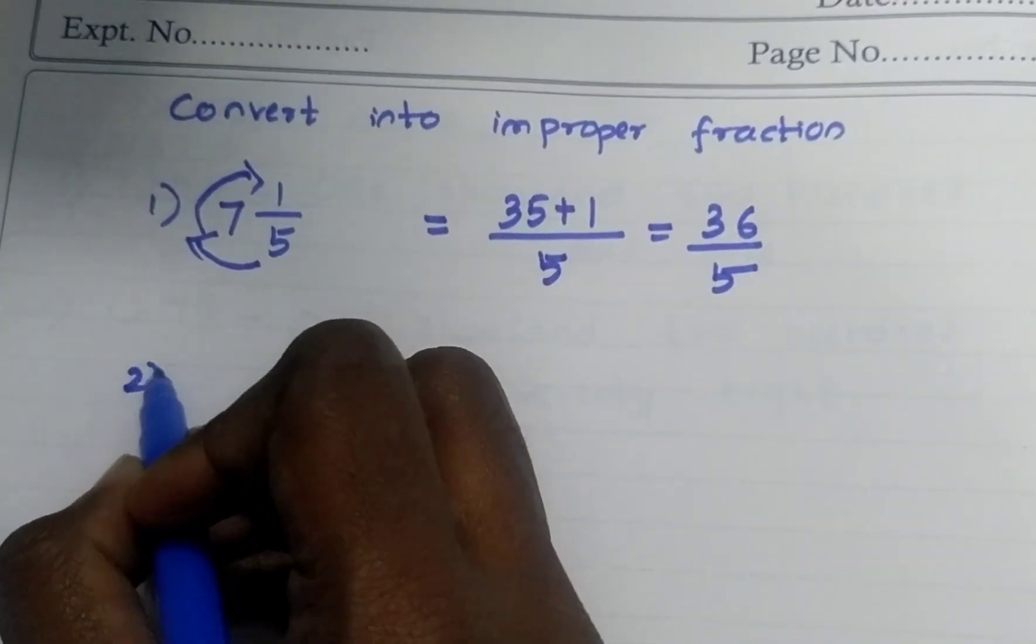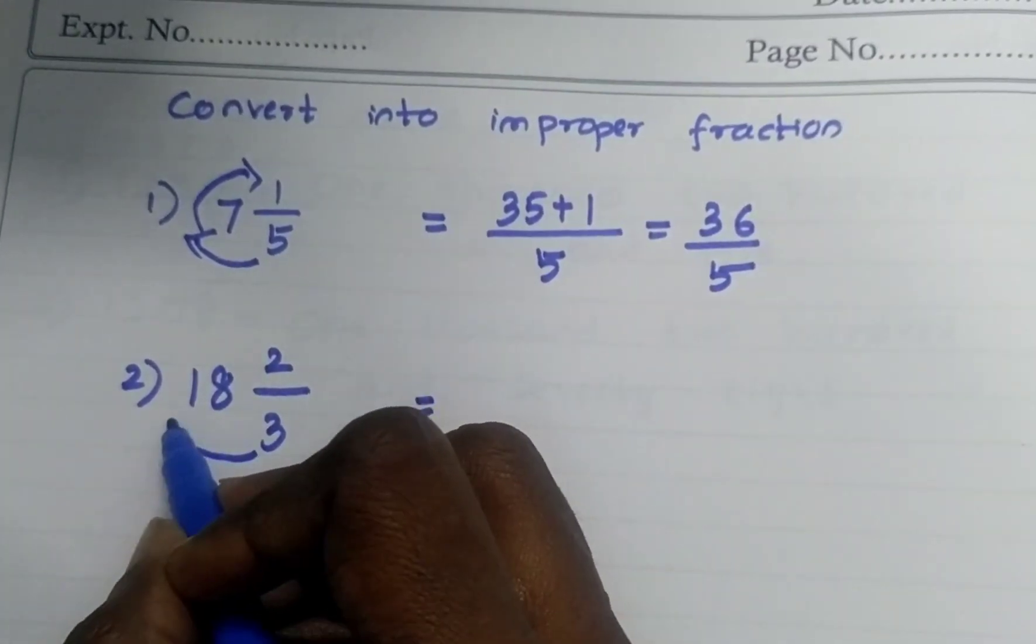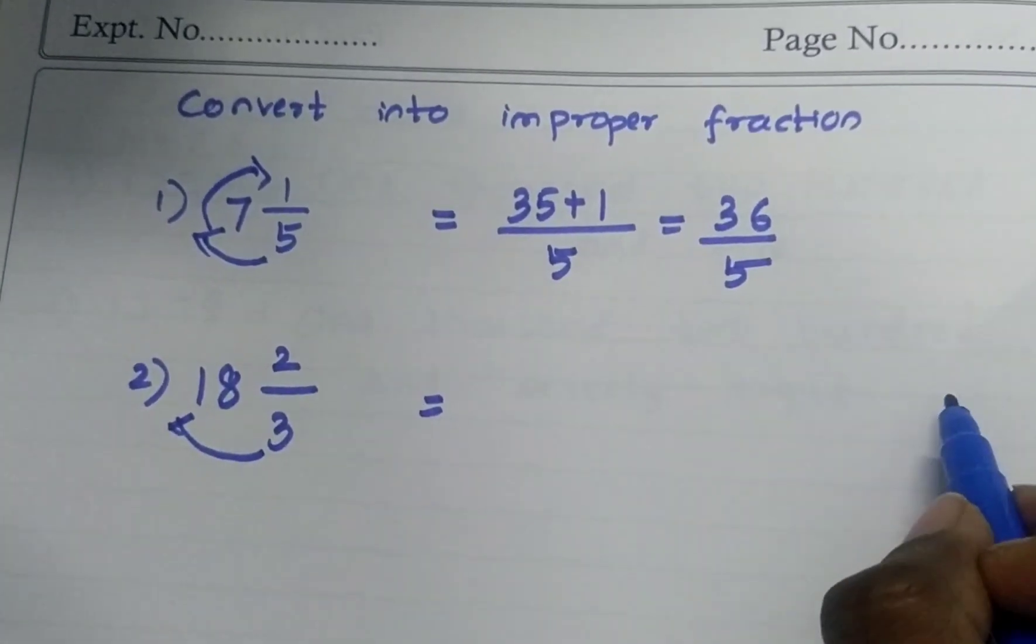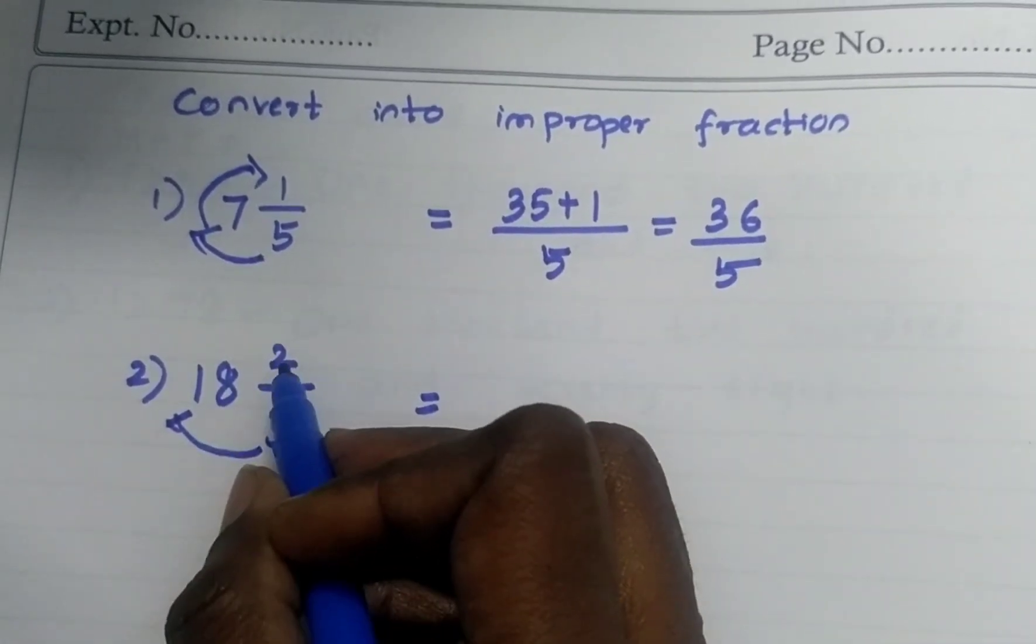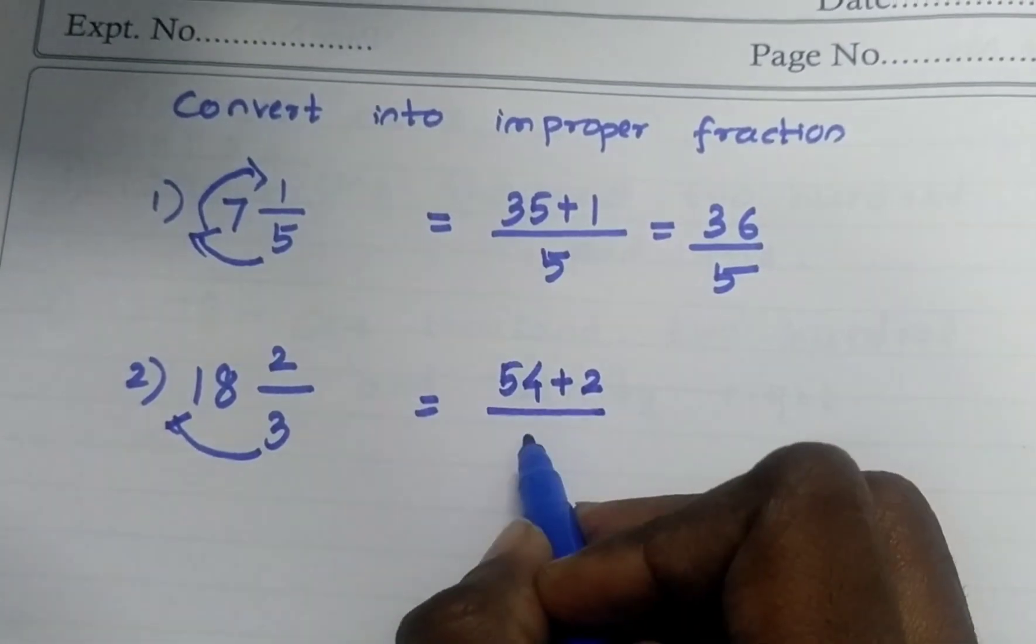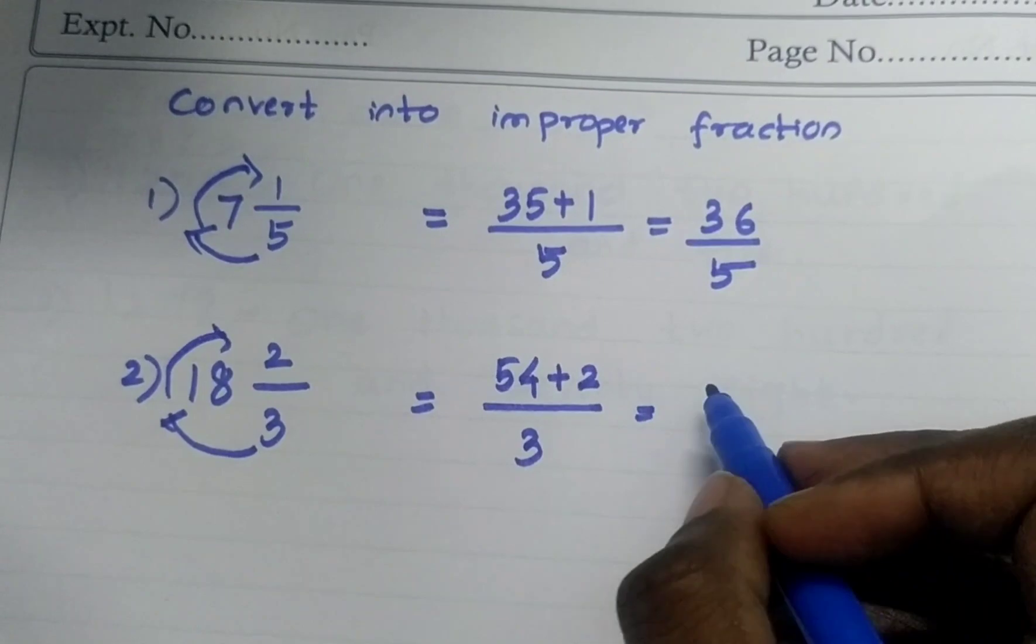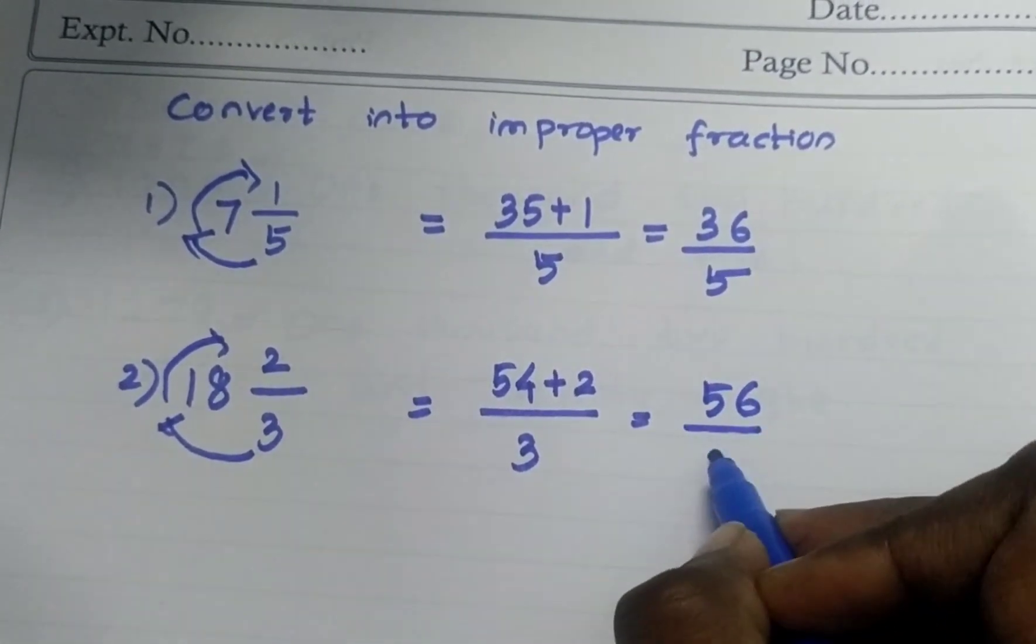One more example. Always left side: 18 into 3 is 54. 54 plus 2 by 3. Always remember this - left side. So 56 by 3.